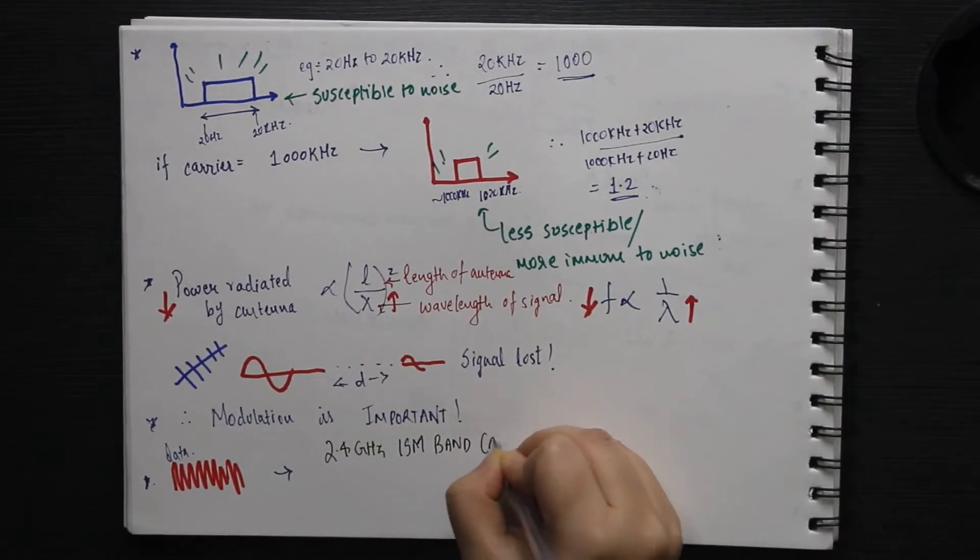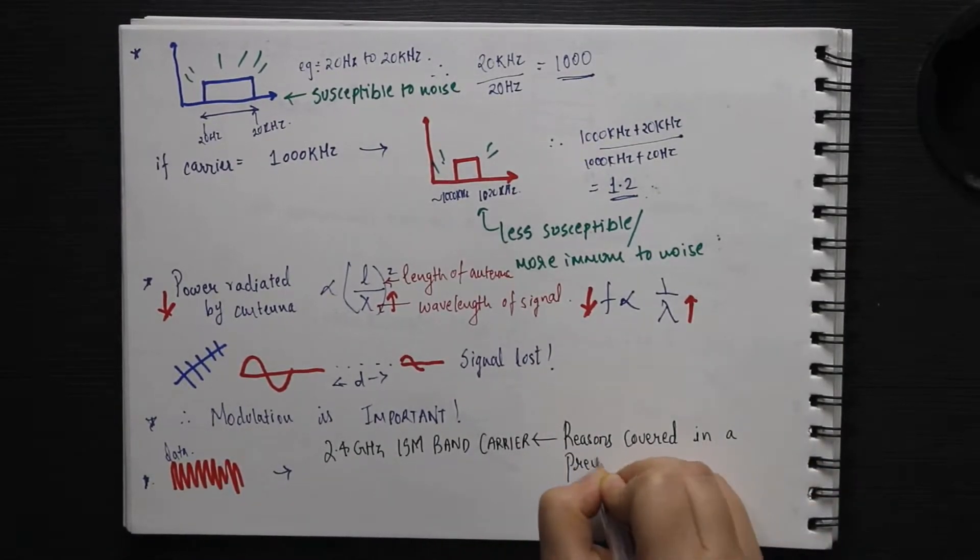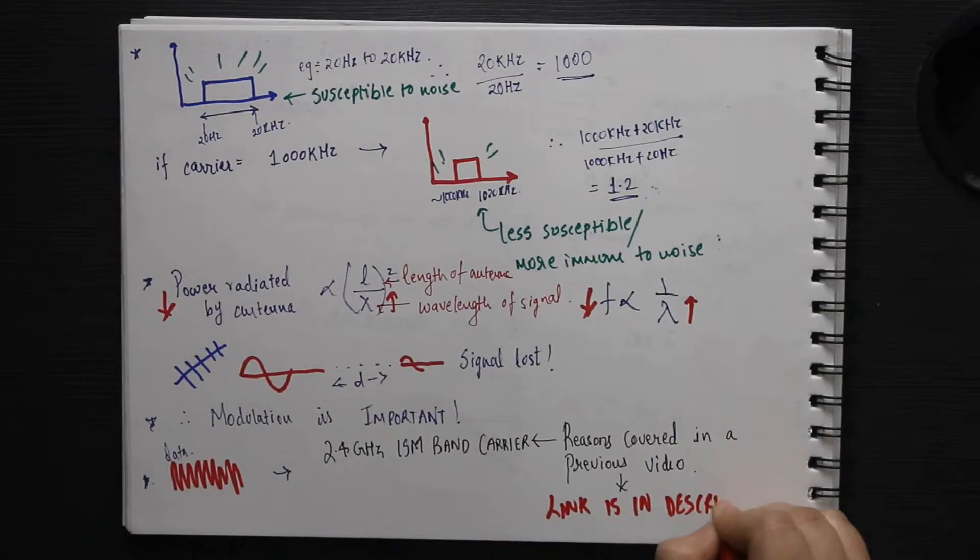In case of Bluetooth low energy and Bluetooth, we use 2.4 GHz ISM band for carrier signal. The reason for using this band is covered in a previous video on this channel.